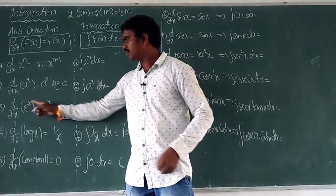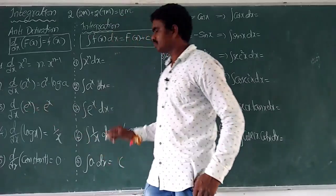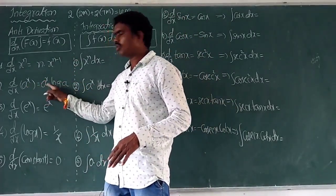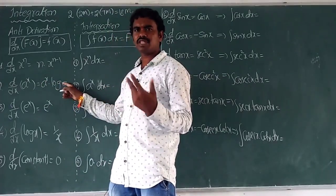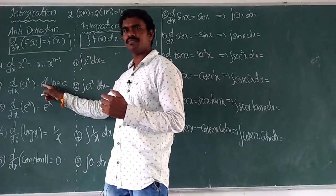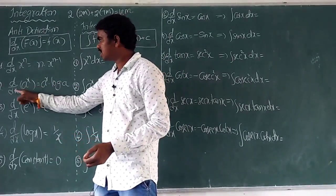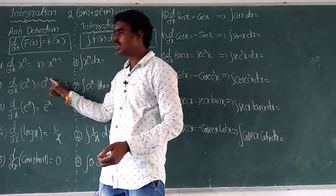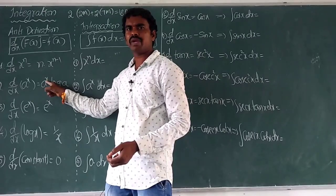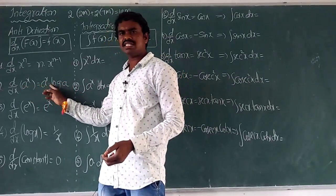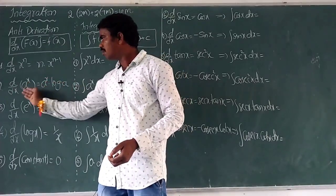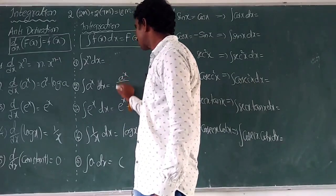Derivation of e^x is e^x, so integration of e^x is e^x. For the next formula — derivation of a^x is a^x·log(a). In the textbook, they ask what is the integration of a^x. Since log(a) is a constant with respect to x, it goes to the denominator. So integration of a^x means a^x divided by log(a).